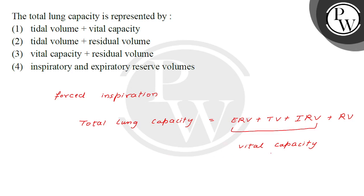So total lung capacity equals vital capacity plus residual volume. Now looking at the options: tidal volume and vital capacity — incorrect. Tidal volume and residual volume — also incorrect. Vital capacity and residual volume — this is correct. Inspiratory and expiratory reserve volume without tidal volume is also correct. Thank you.